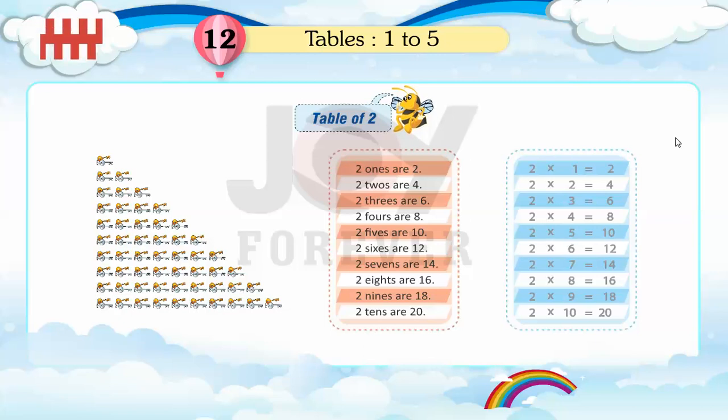2 threes are 6, 2 fours are 8, 2 fives are 10, 2 sixes are 12, 2 sevens are 14.